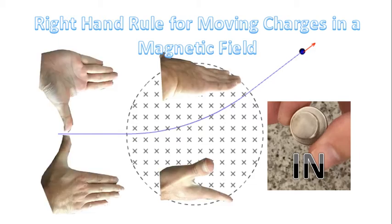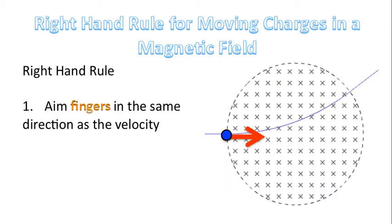So the question is: is there a rule that we can use to predict the deflection direction of the charged particle — in other words, to predict the direction the force will act on a charged particle when it enters a magnetic field? And yes, there is a rule. It's called the right hand rule for moving charges in a magnetic field. And as you can see from the photos, it implies using the right hand.